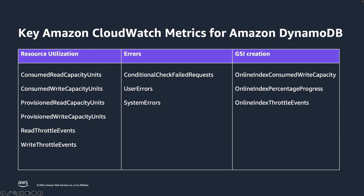We have grouped these key metrics into three categories: resource utilization, errors, and GSI creation. Resource utilization metrics include consumed read and write capacity units, provisioned read and write capacity units, and throttle events. Errors include conditional check failures, user errors, and system errors. GSI creation related metrics include online consumed write capacity, percentage progress, and throttle events.